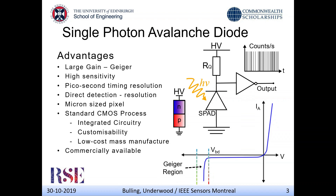The amount of times the SPAD actually triggers. So why use SPADs? What makes them so novel? They have very large inherent gain as a result of the Geiger region, which results in high sensitivity and single photon detection. They have picosecond timing resolutions, so extremely fast. They allow for direct detection, which improves resolution. They have extremely small pixel sizes, and all of this is designed and manufactured in standard CMOS processes, which provides advantages such as integrated circuitry, customizability, low-cost mass manufacture, and they are already commercially available. So any application using SPADs has large commercial potential.